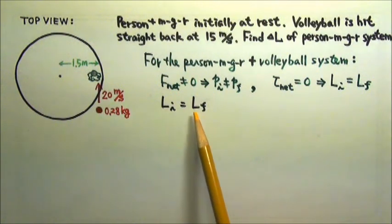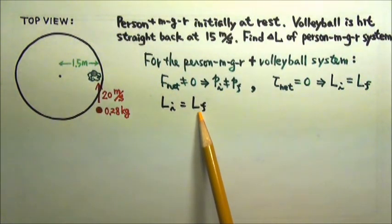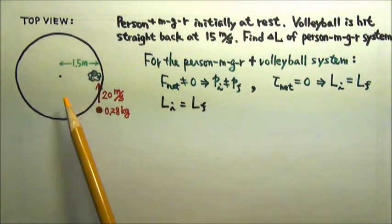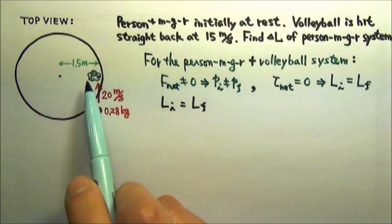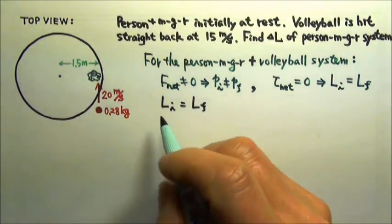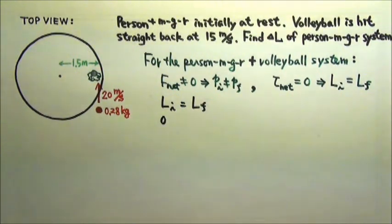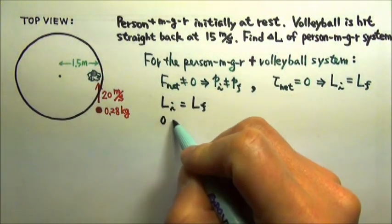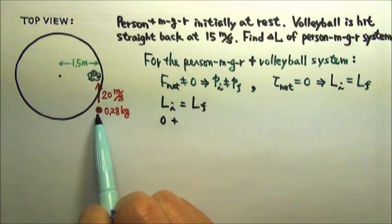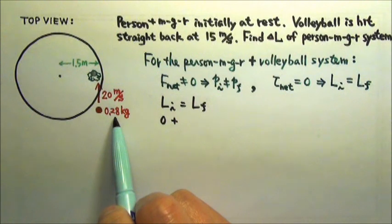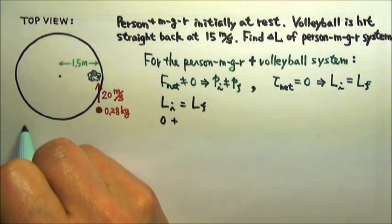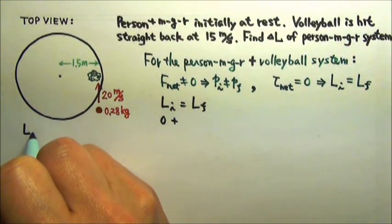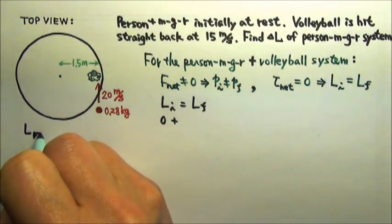The initial angular momentum equals the final angular momentum for the person's merry-go-round plus volleyball system. Initially, the person and merry-go-round are at rest, so they do not have any angular momentum, but the volleyball does. For the volleyball, we can treat it as a point mass. We know the mass and the velocity, so it is convenient to use the angular momentum for the point mass equation.